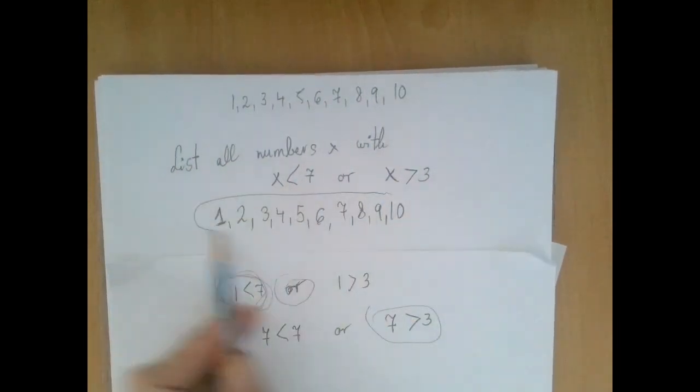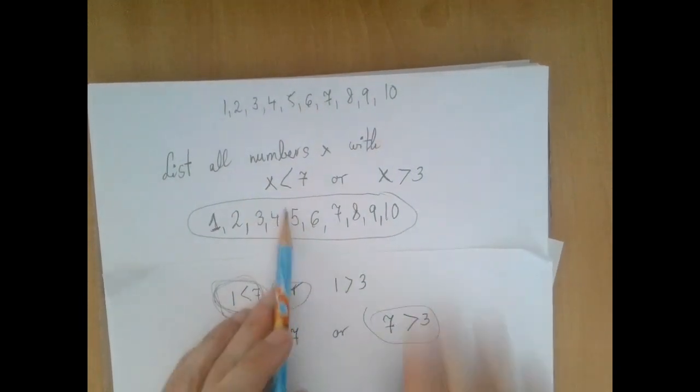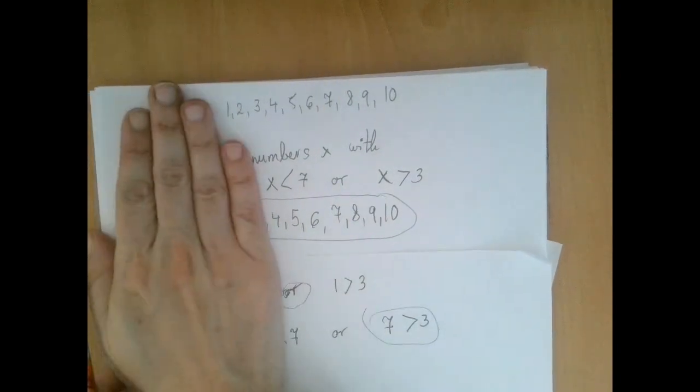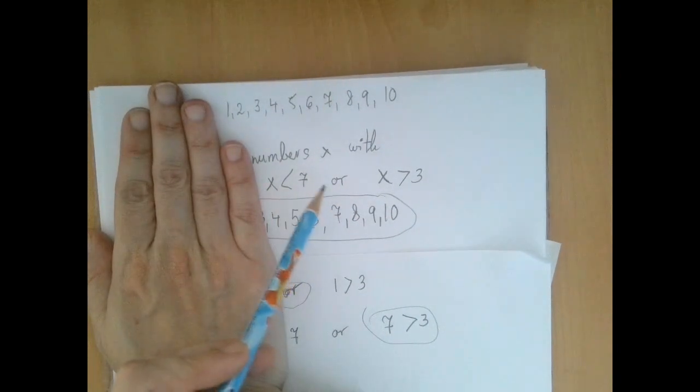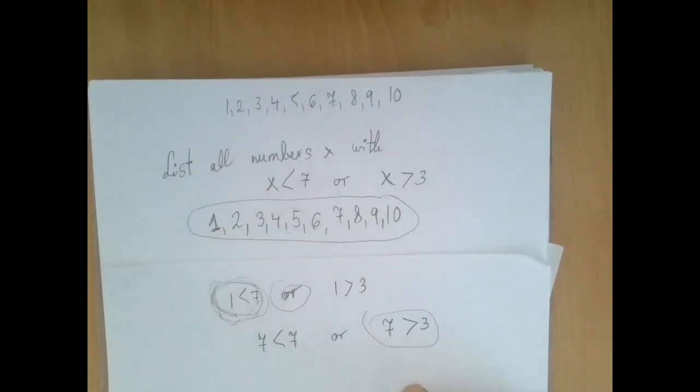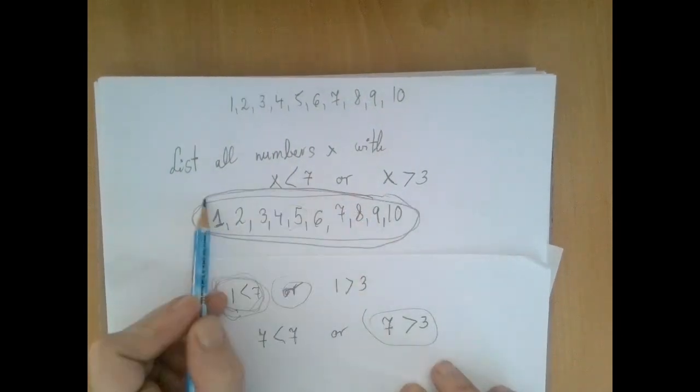So this was a large list. Every single number on this list is either less than 7, these guys, or greater than 3, these guys. And this is not an exclusive or, right? You can have both, like 5. 5 is less than 7 and bigger than 3. So the answer to this part is all 10 numbers.